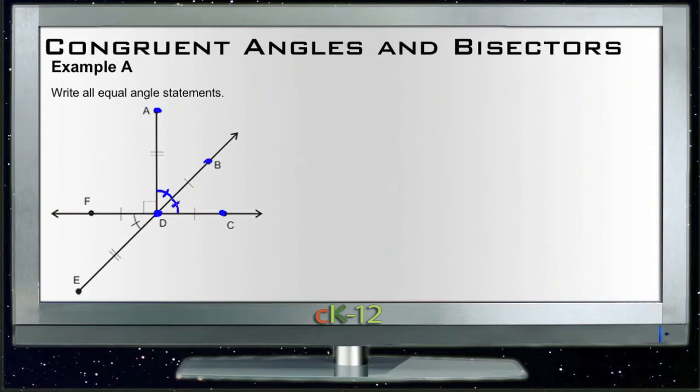So we can see that angle ADB is congruent to angle BDC. And we can also see that angle FDE on the lower left is also marked with a single hash, so it is also congruent to both of those angles. So we can just actually add another congruency symbol here, angle FDE.